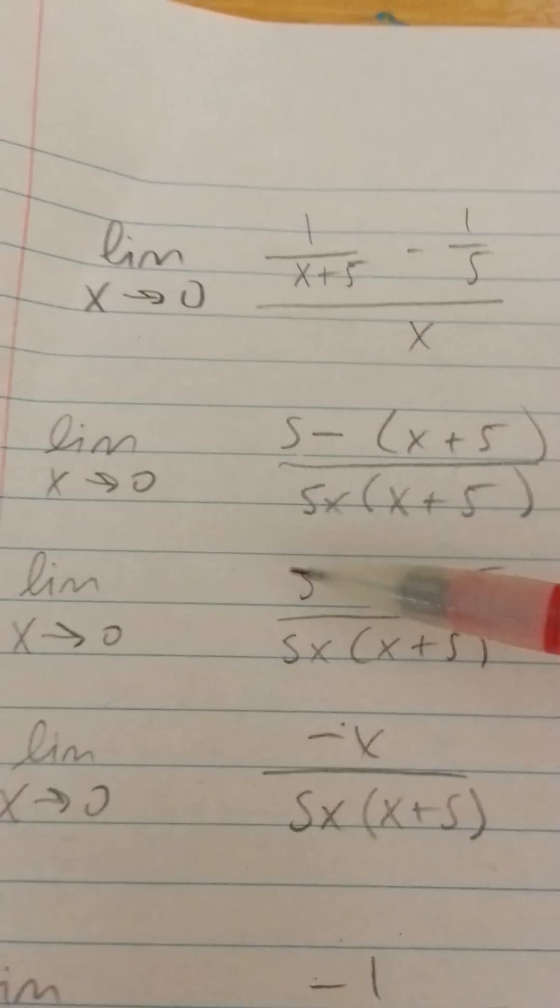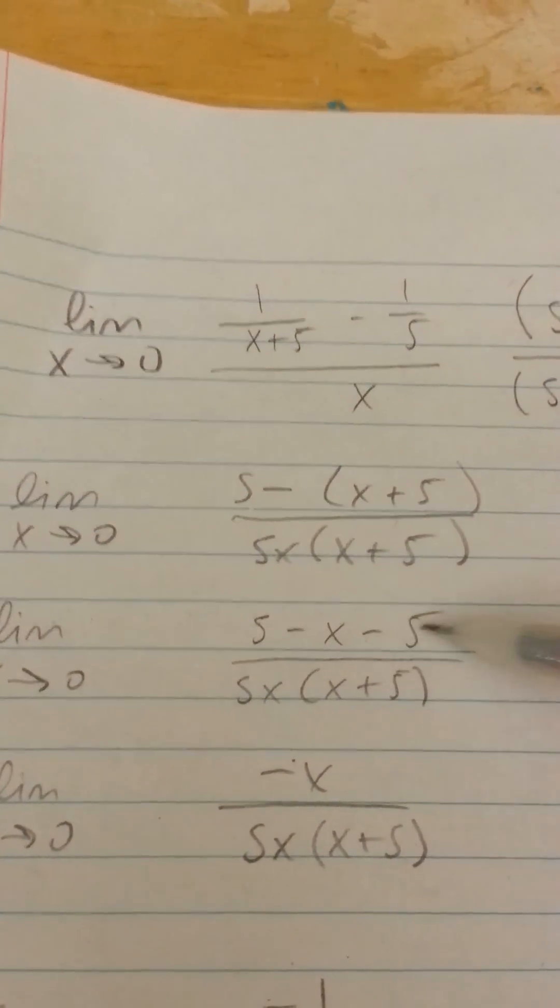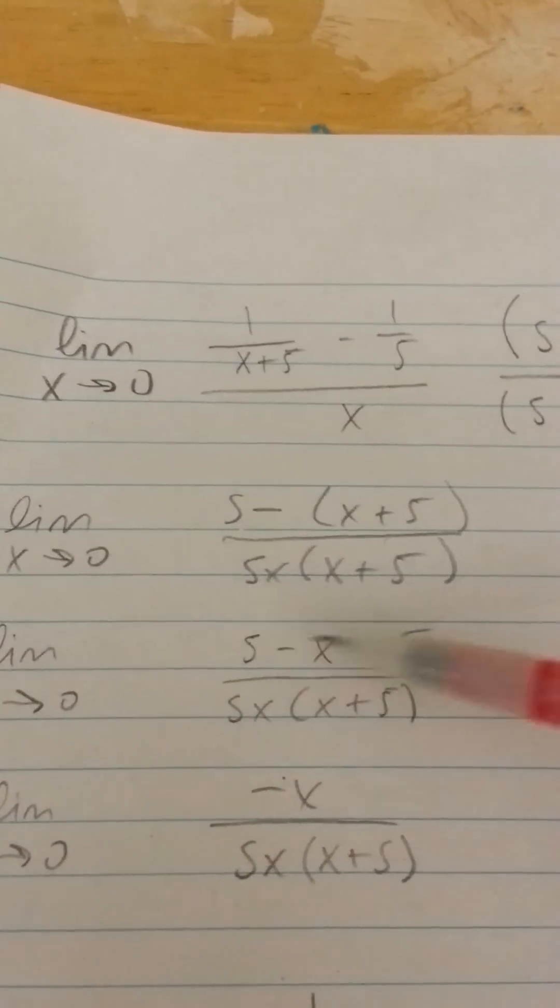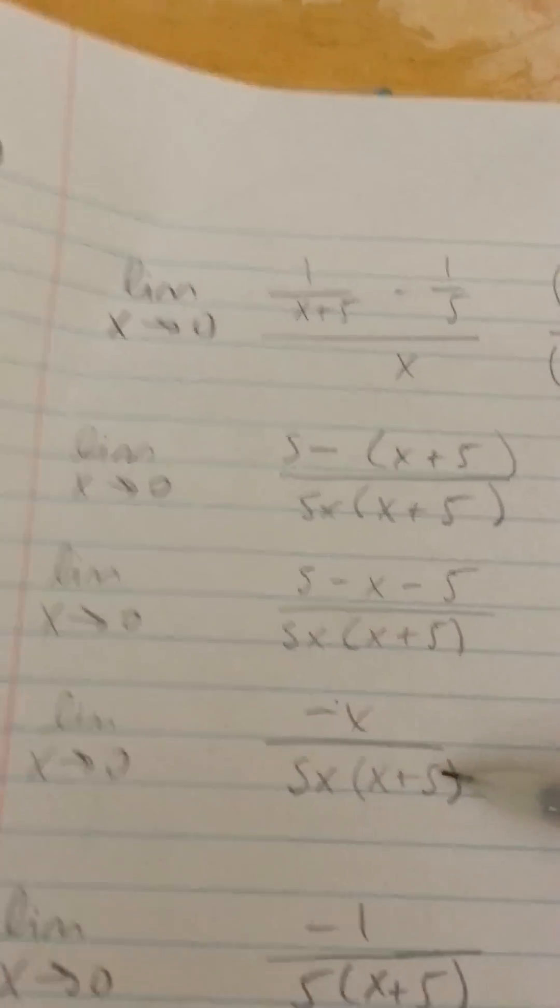Okay, so then when we distribute that negative to both terms, 5 minus x minus 5 all over 5x times x plus 5, we can cancel out those 5s so you get negative x over 5x times x plus 5.